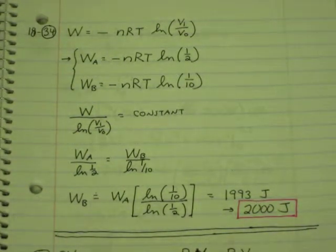Question 34. It takes 600 joules to compress a gas isothermally to half its volume. How much work to compress it by a factor of 10, starting from its original volume?